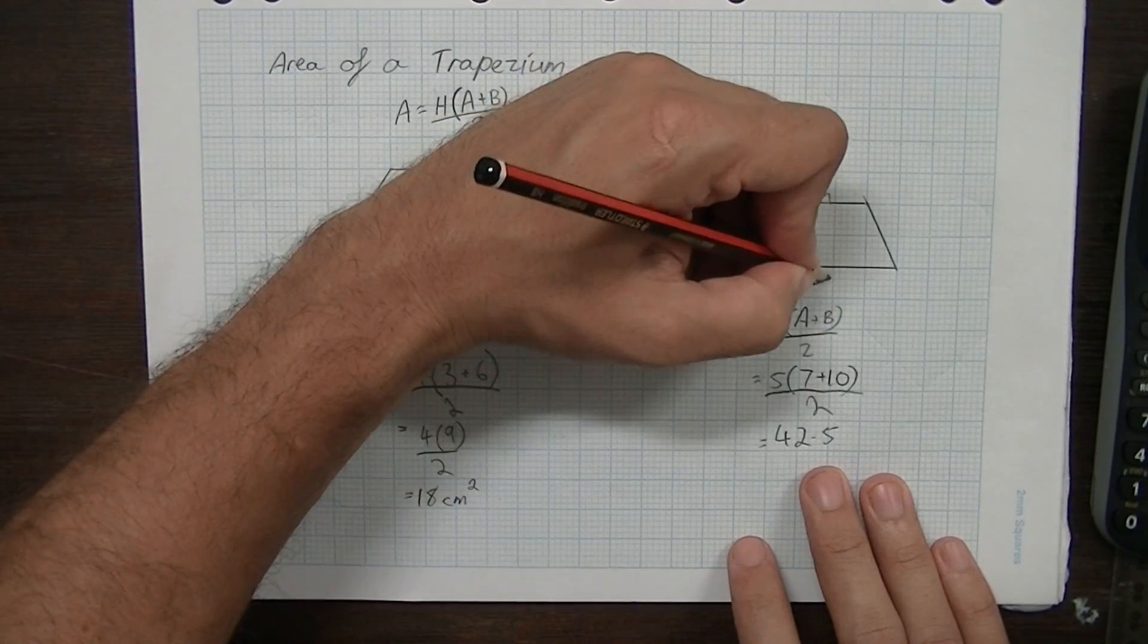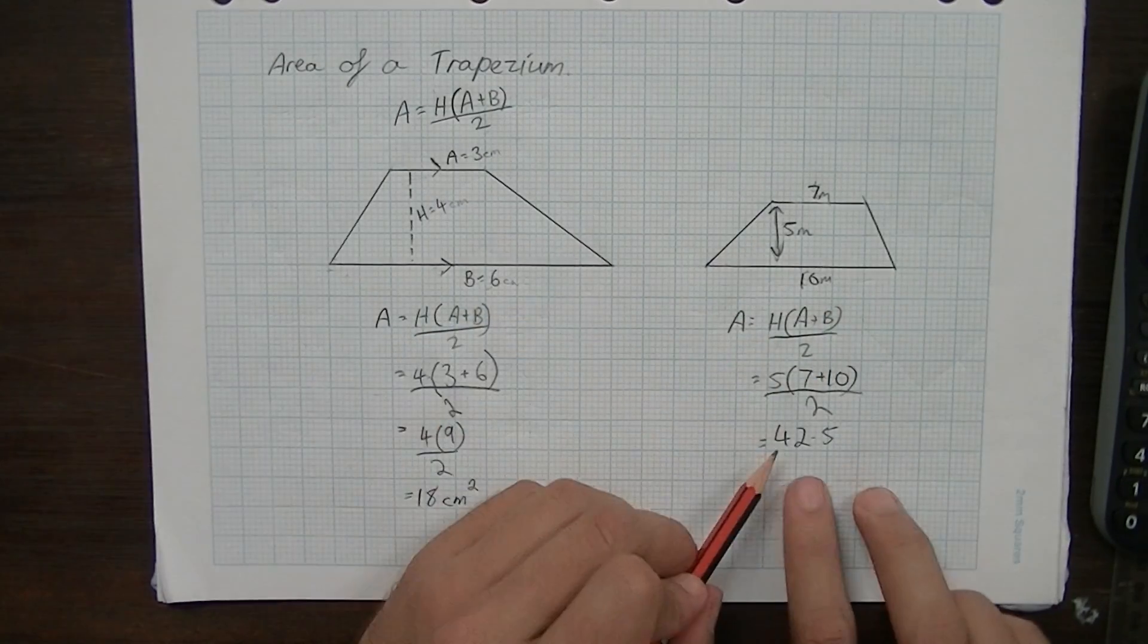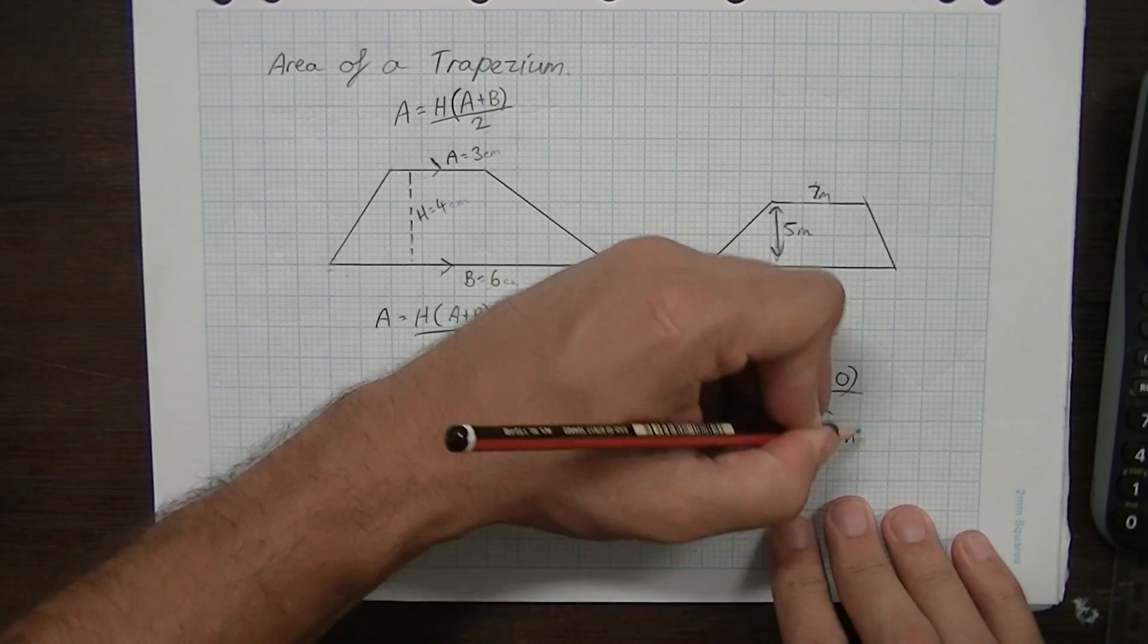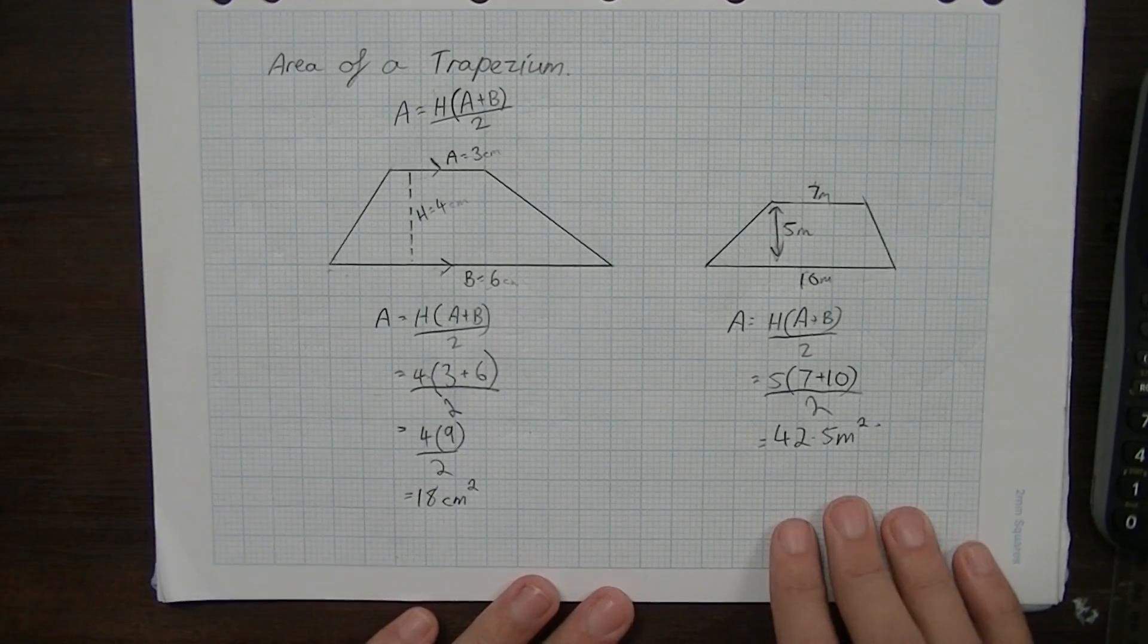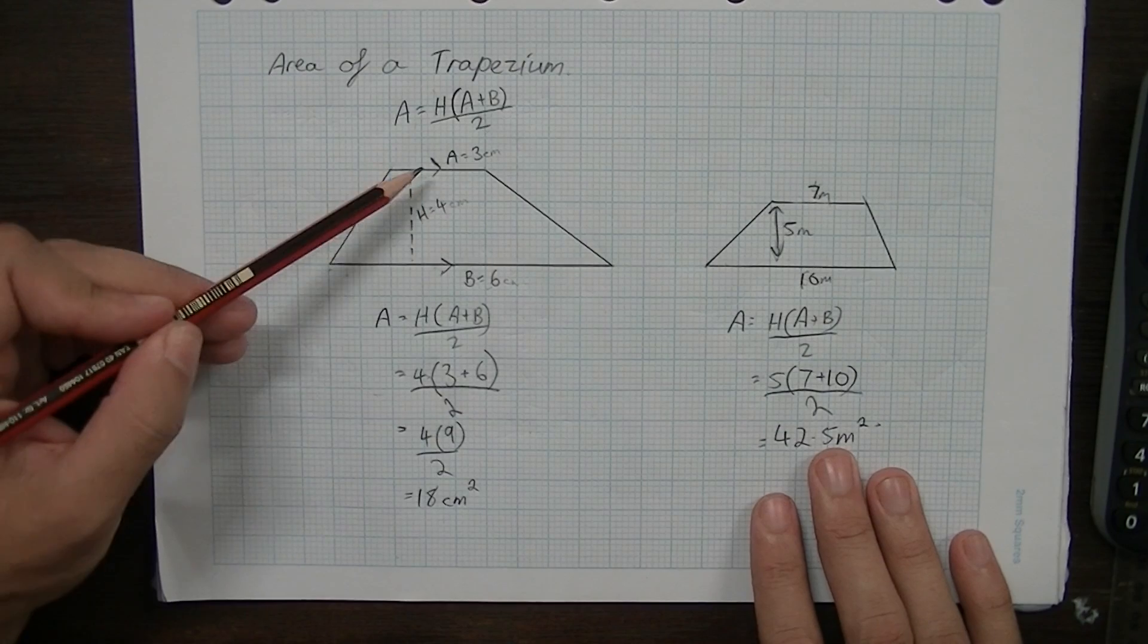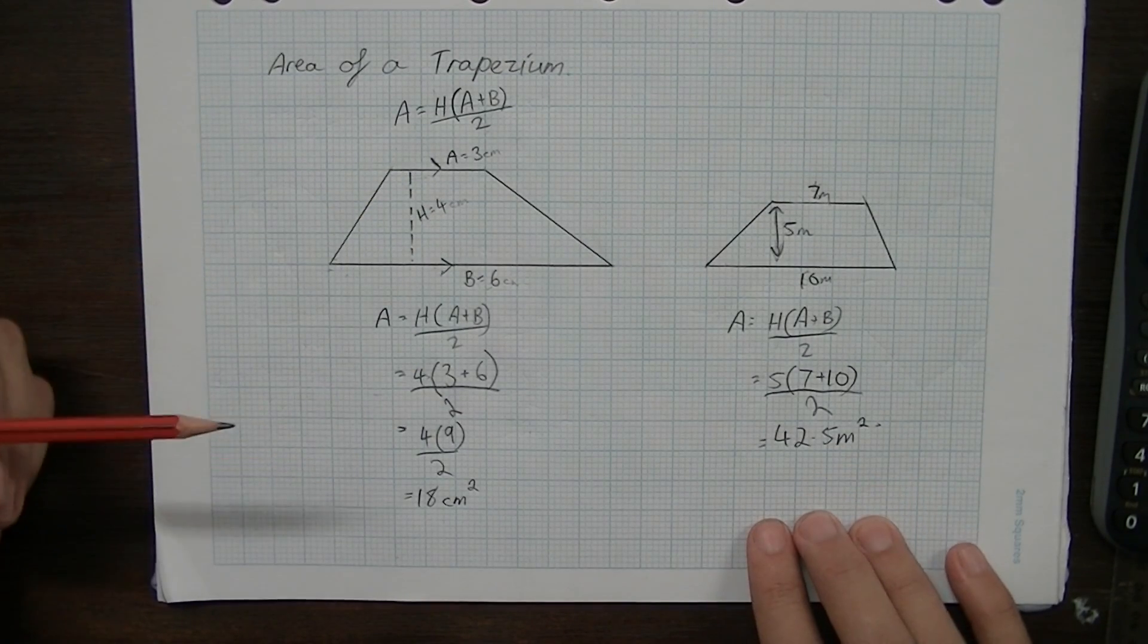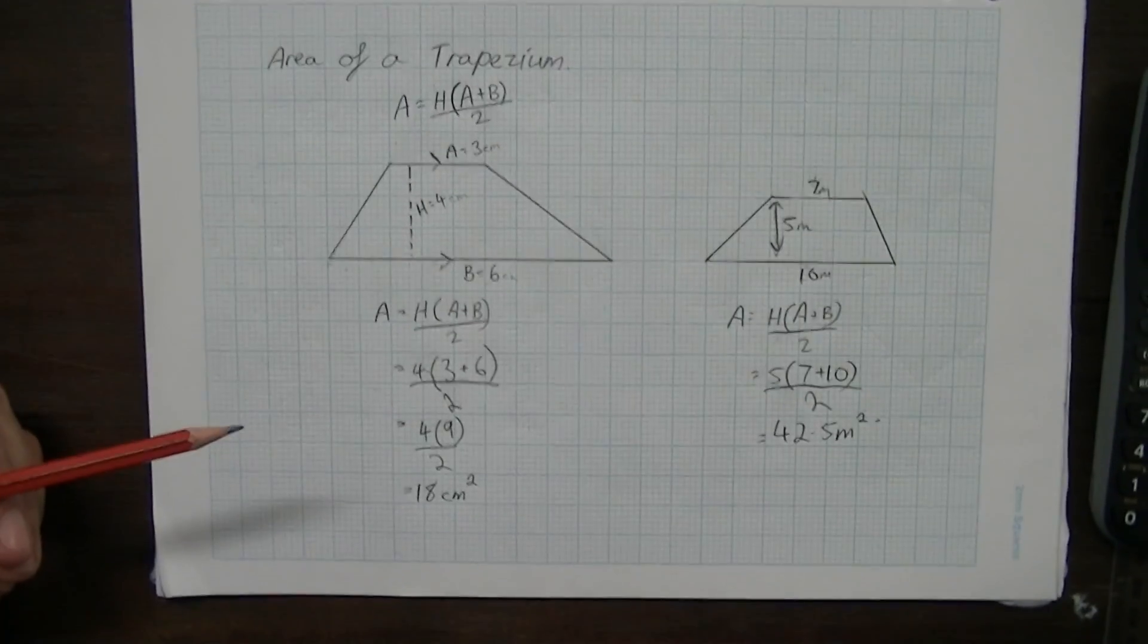And you'll get something like 42.5. Let's go for something different. Let's call it metres. Everything's metres. 7 metres by 5 metres by 10 metres. So it's 42.5 metres squared. That's finding the area of a trapezium. The formula's a little more complicated than the other ones that we've done. But once you just throw some numbers in there, you shouldn't have too much trouble with it.